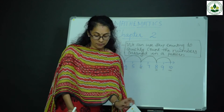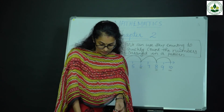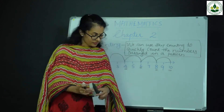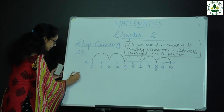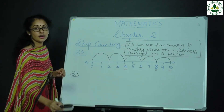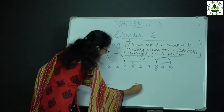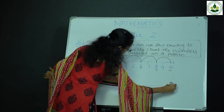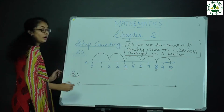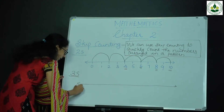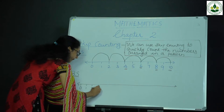Next one is skip counting of 3s. First I draw a number line and mark numbers 0, 1, 2, 3...